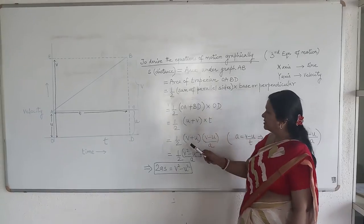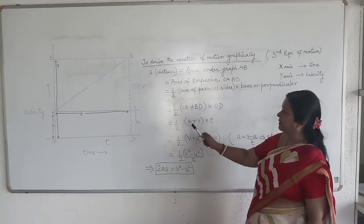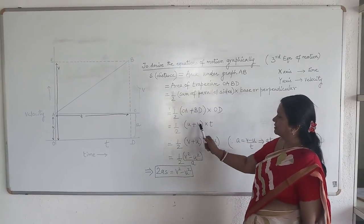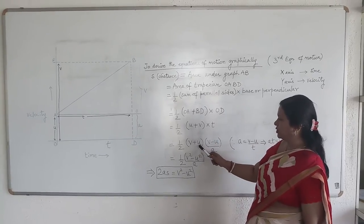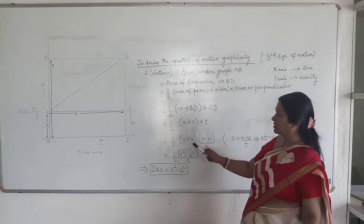And when we substitute this, we can write half, change the sides. We have just reshuffled it. V plus U. We know that addition is commutative.